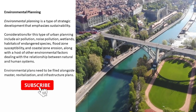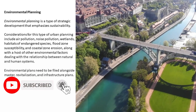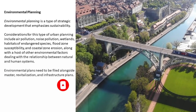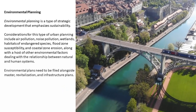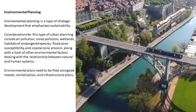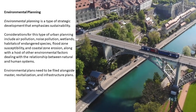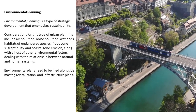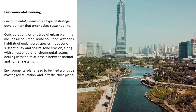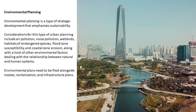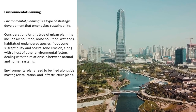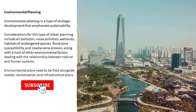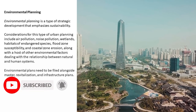Environmental planning addresses factors including air pollution, noise pollution, wetlands, habitats of endangered species, flood zone susceptibility, and coastal zone erosion, along with a host of other environmental factors dealing with the relationship between natural and human systems. Environmental plans need to be filed alongside master, revitalization, and infrastructure plans.